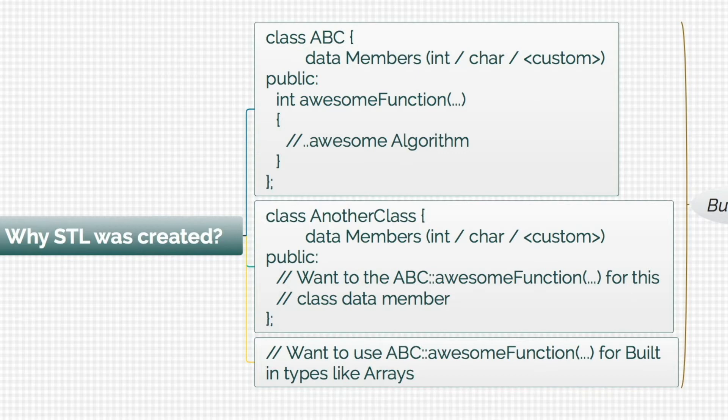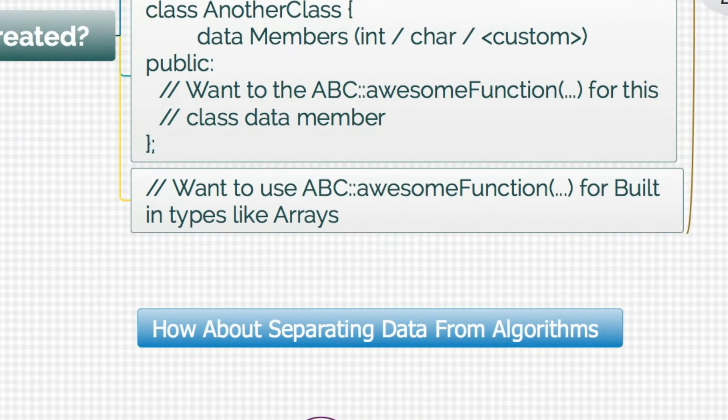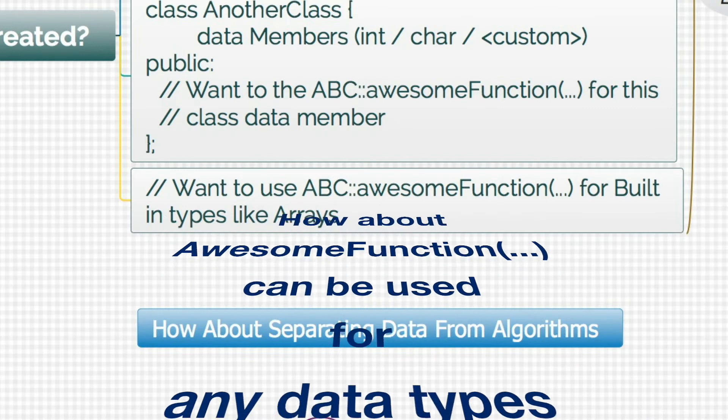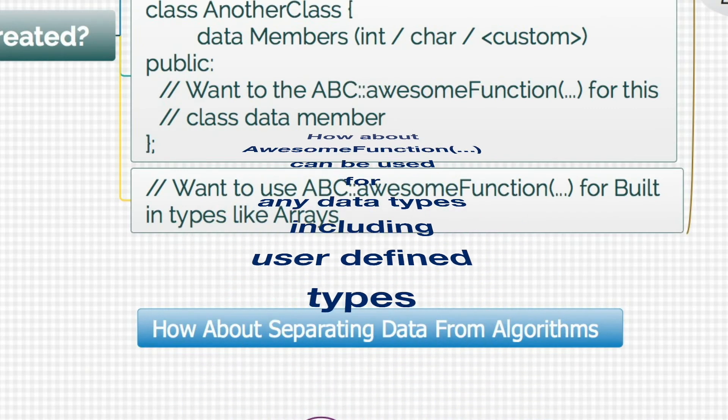The question is how? How about if we separate data from algorithms? How about creating awesome function in a way where it can be used for any data type, including user-defined types?